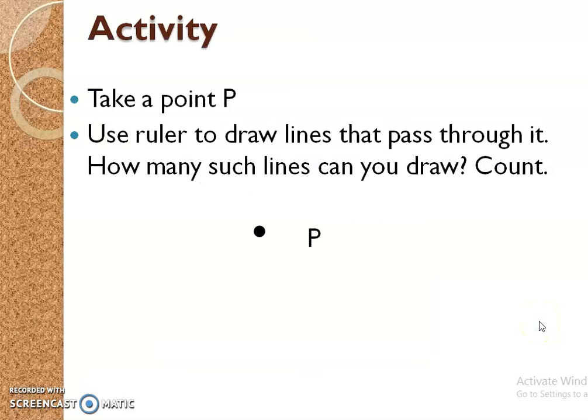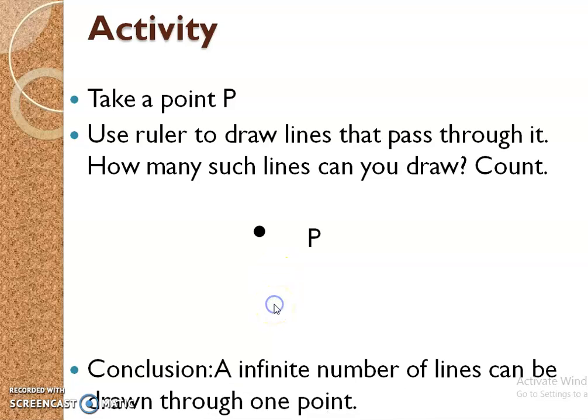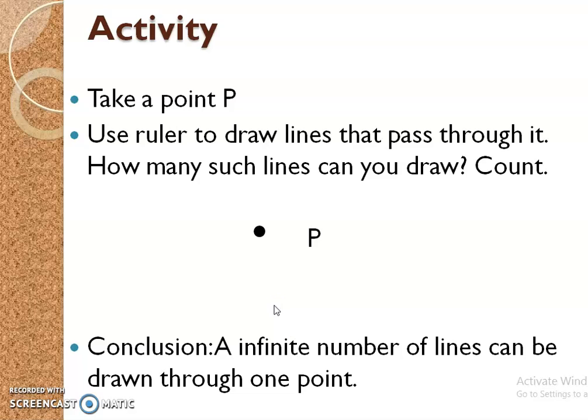Activity: Take a point P, use a ruler to draw lines that pass through it. How many such lines can you draw? Count it. From point P, we can draw an indefinite number of lines. We can conclude that an infinite number of lines can be drawn through one point.